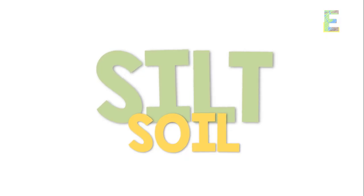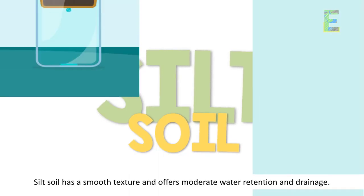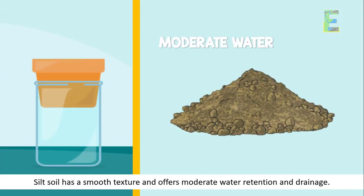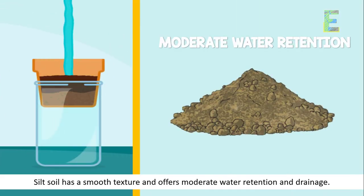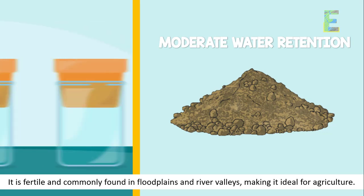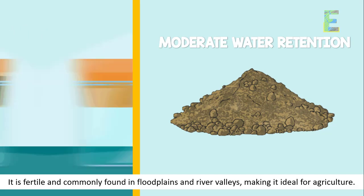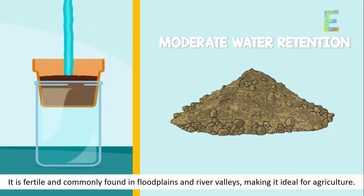Silt Soil. Silt soil has a smooth texture and offers moderate water retention and drainage. It is fertile and commonly found in floodplains and river valleys, making it ideal for agriculture.